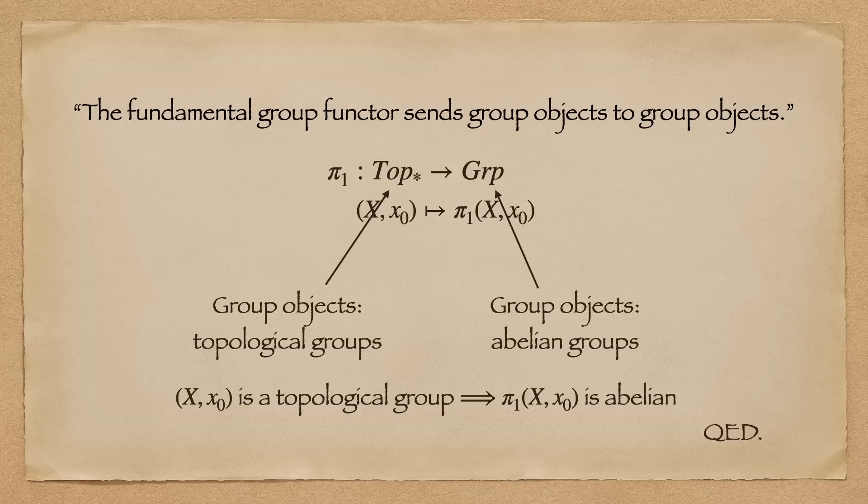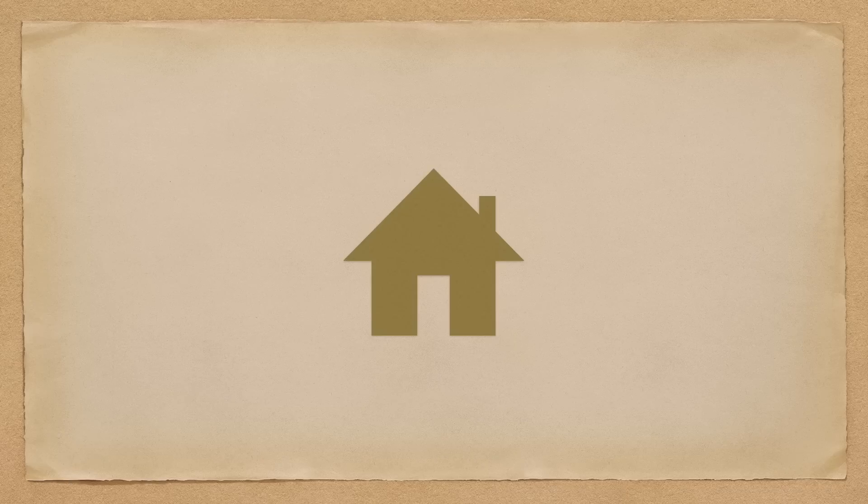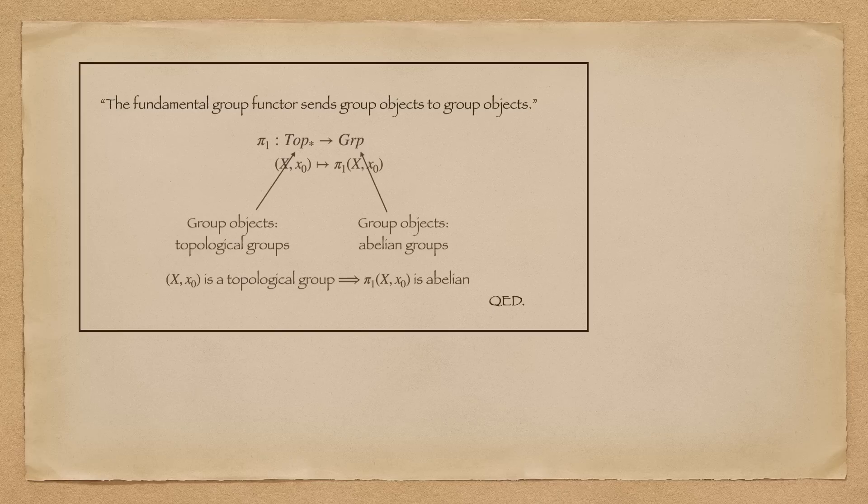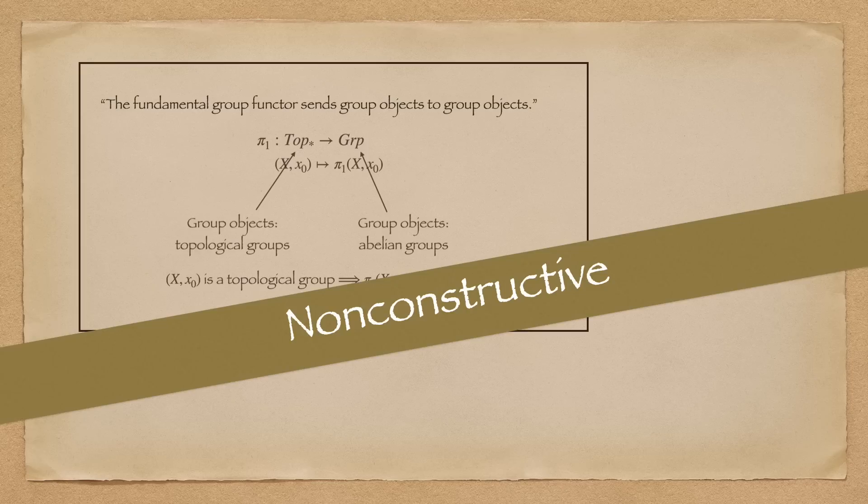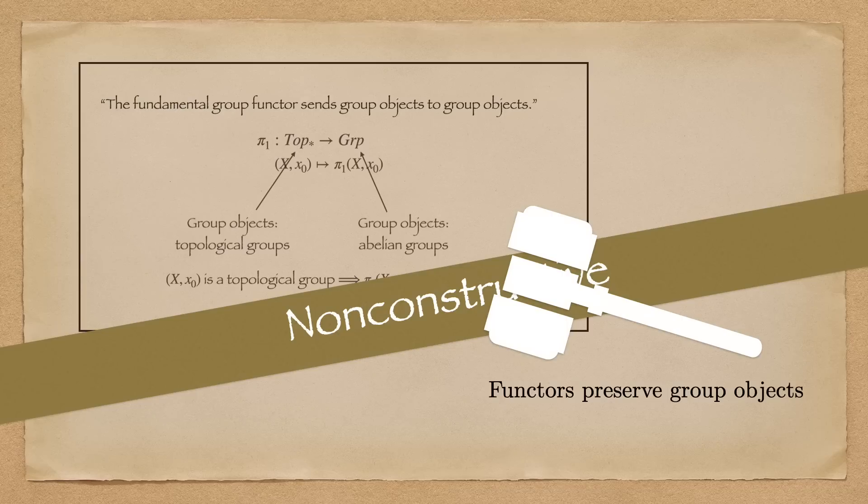As we can see, category theory makes obvious things obvious when the details obfuscate the specific case. This doesn't mean proofs using category theory are better or easier, but that category theory reveals the frame upon which the subject is built. You might notice that in this proof there's no construction to be found, and this is often the case with proofs using category theory.